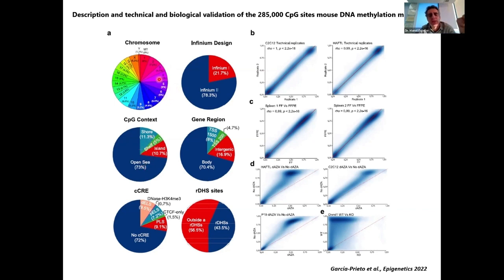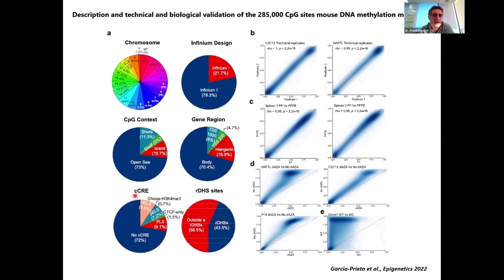Most CpG sites and probes are in open sea, and most are also in the body of genes. About 25–30% are in classical regulatory regions around minus 1,500 to minus 200 of the transcription start site. A lot are in the gene body — an area that requires much more research, as we know very little about the effects of DNA methylation changes there. Others are in distant regulatory regions, such as cis-regulatory elements, enhancer-like probes, promoter-like probes, and DNase hypersensitive sites — relevant because many cancer changes happen not just at proximal promoters but also at distant regions.